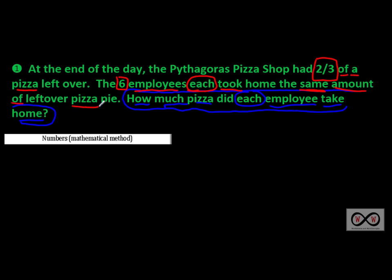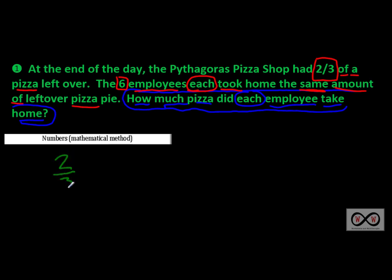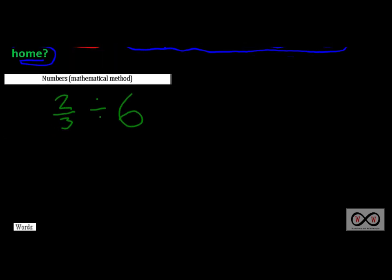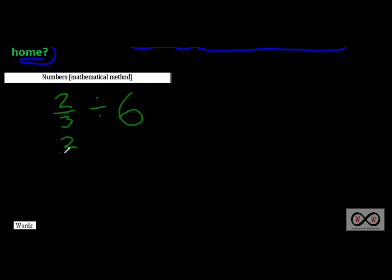Let's take a look at the mathematical method. We're dealing with two-thirds first — this time, unlike our previous example, we're starting with the fraction. Two-thirds of a pizza pie is leftover, and the six employees each took home the same amount. So we're dividing two-thirds by six employees: two-thirds of a pizza divided by six people. We've also noticed in previous lessons that we can rewrite the whole number six as a fraction.